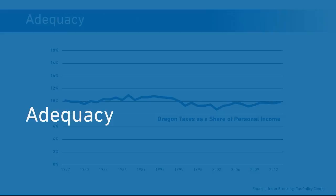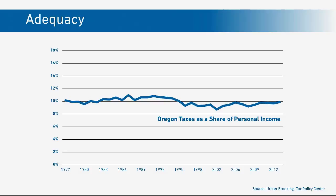Since 1977, we've averaged about 10 percent, and we've gone up and down — as high as 11 percent, as low as 9.3, and then in 2013, back to the 10 percent average. It's also important to pay attention to what's called general revenues, which adds in fees and charges, tuition, and the lottery, et cetera. That gets us up to about 16 percent of total personal income.